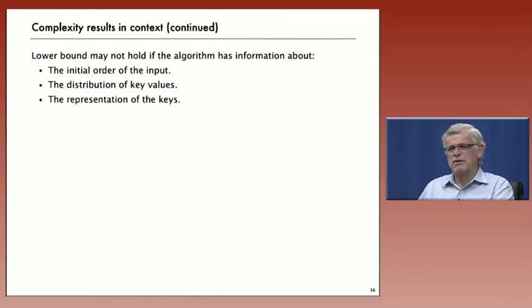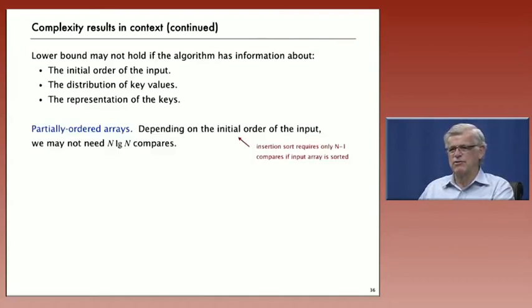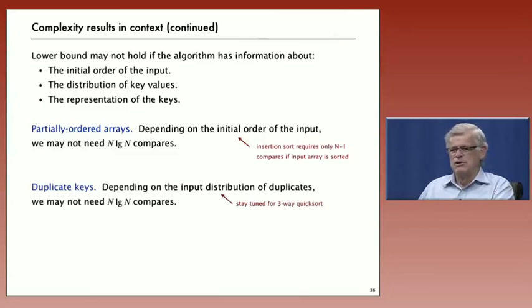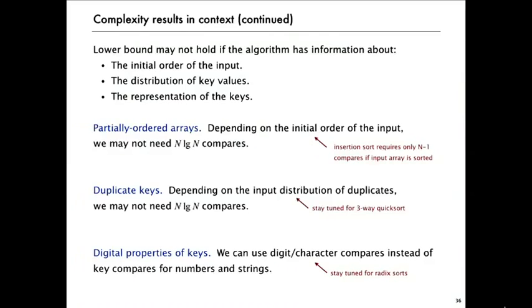Or, something about the distribution of key values. If there are a lot of equal keys, we can get it sorted faster than in N log N. And maybe the way the keys are represented, we'll look at different methods that take advantage of such properties. So, partially ordered arrays, we may not need N log N compares. Duplicate keys, we may not need N log N compares. We're going to look at a method that's done in linear time in a lot of situations.